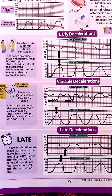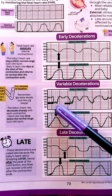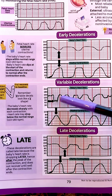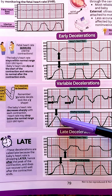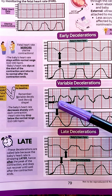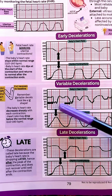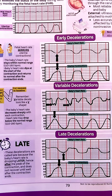Variable decelerations are not normal. With the fetal heart rate, it can have these sudden drops whenever these contractions are occurring that can have like a V shape to them. This can be caused by umbilical cord compression.